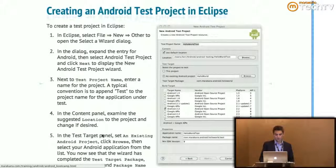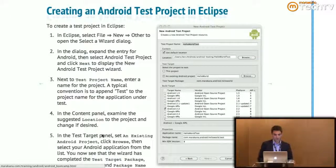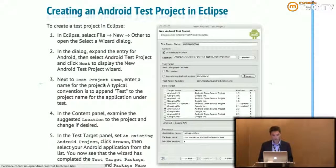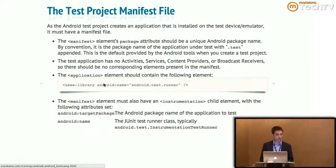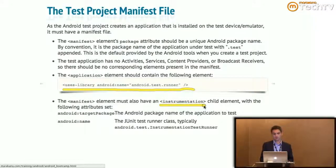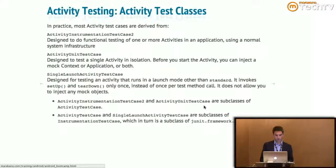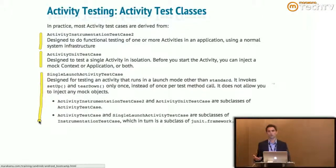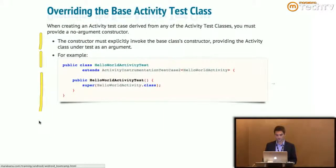To create a test project in Eclipse, you create another project just like normal but specify it's a test project. You have two projects: one is a regular app, the other is a test app testing the first. Your test code needs to specify it's using the 'android.test.runner' library and also specify the instrumentation information — declaring that it's instrumenting another application — along with the target package name.